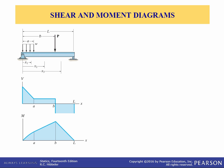In general, the internal shear and bending moment functions will be discontinuous — or their slopes will be discontinuous — at points where distributed load changes, or where a concentrated force or couple moment is applied. Because of this, these functions must be determined for each segment of the beam located between any two discontinuities of the loading. For example, we have a distributed loading here, so we're going to have x1 inside that distributed loading. x2 occurs after the distributed loading ends but before the applied force P. The third situation, x3, is after the applied force P is applied.